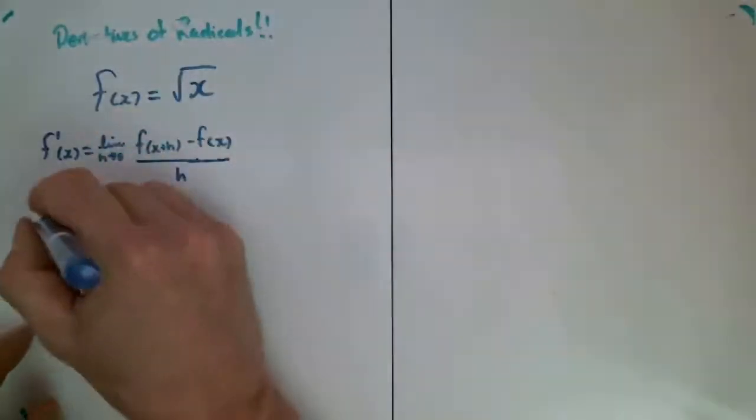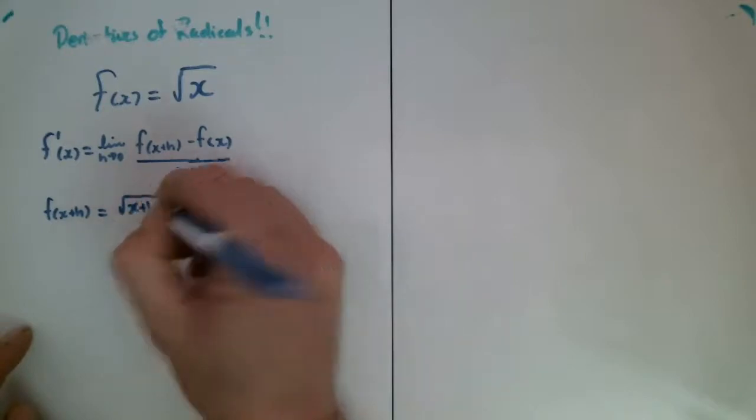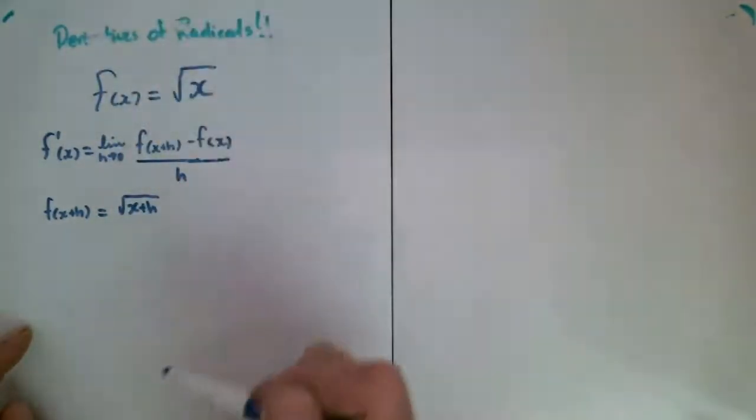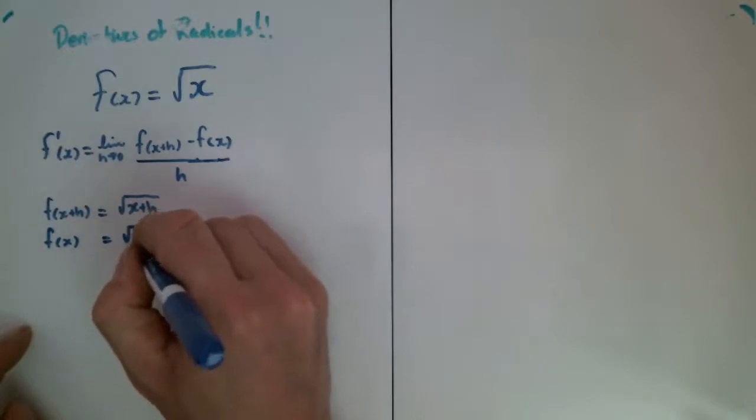So what is f at x plus h? Well, f at x plus h has to be equal to the square root of x plus h. After all, the function at x is equal to the square root of x, and so the function of x is just equal to the square root of x.